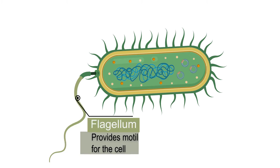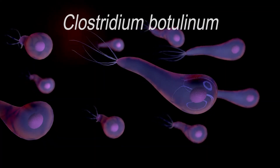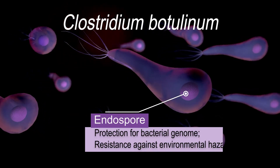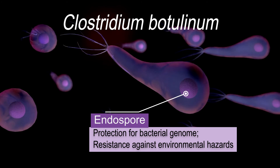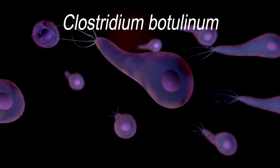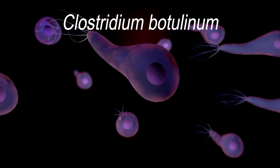The flagellum is a structure which enables motility of bacterial cells. This structure is a long appendage, or whip-like, which rotates at the terminal end of the cell membrane. For some bacteria, like Clostridium botulinum, they are able to produce endospores, which are highly resistant to very harsh conditions such as high temperatures and other environmental hazards. The process of spore formation is called sporulation.